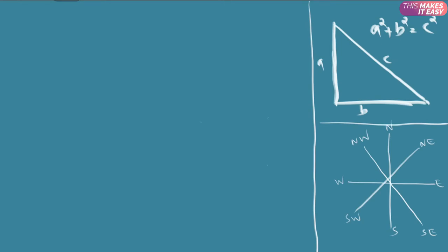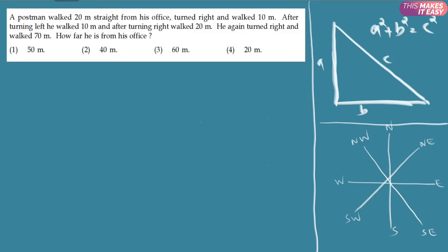Now let's take real questions from previous papers. This is a question from 2017 November. There is a postman who walked 20 meters straight from his office. Let's draw this — he starts here and goes 20 meters straight. Then he turned right and walked 10 meters, so I draw it to the right like this.